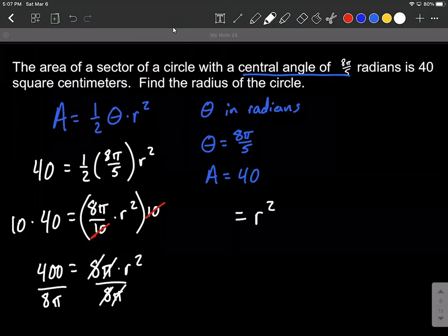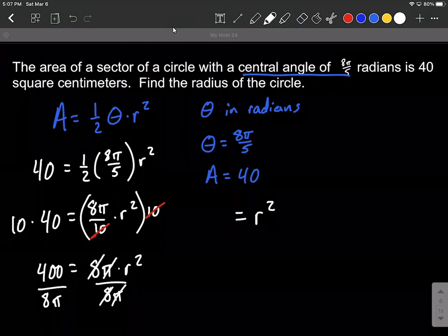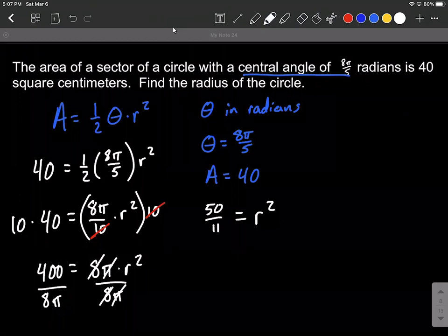I'm going to go ahead and say that's r squared over on the right-hand side. On the left-hand side, I think we can reduce this down, thinking 400 and 8, those both have an 8 in common, so this will reduce down to 50 over π.